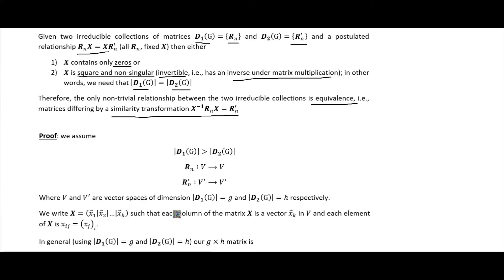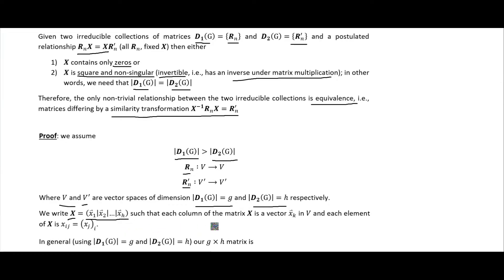To get into the proof: we assume that the order of this irreducible representation is larger than the order of the other. So we have these two vector spaces, since the representations will have different bases and different dimensionality, where V and V prime are vector spaces of dimension G and H respectively.